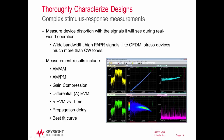The 89600 VSA software can also be used to measure and analyze multiple signals at one time. One example is these complex stimulus response measurements shown here. This lets you measure the input of your device — the stimulus — and then measure the output of the device — the response signal — and analyze those together to make comparative measurements. You can use any test stimulus you want, including wide modulation bandwidth and complex modulation like OFDM — a realistic signal your device will see in the real world, rather than traditional test methods which only allow for CW tones.